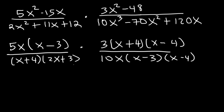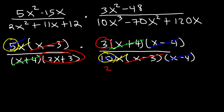Now let's simplify — what can we cancel? We can cancel (x − 3), (x − 4), (x + 4), and x. We can also reduce 5 over 10 to 1 over 2. What we have left over is a 3, a 2, and (2x + 3). So the final answer is 3 divided by 2(2x + 3).